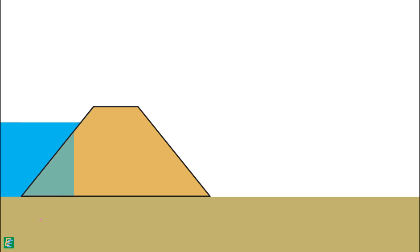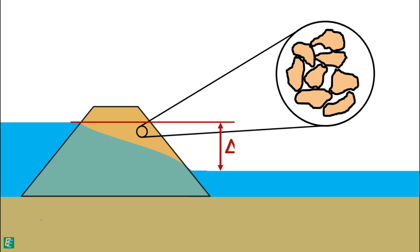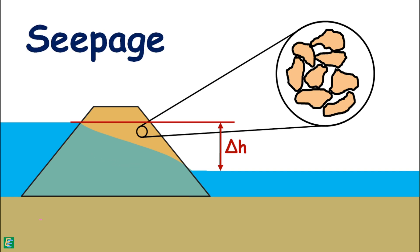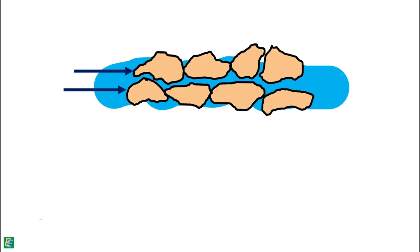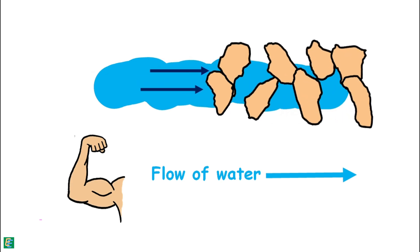The water that an earth dam holds on its upstream side flows through the voids present in the soil of the dam body to the downstream side, driven by hydraulic head difference. This phenomenon — the flow or movement of water through soil — is called seepage. As water flows through the soil, it exerts a drag on soil particles in the direction of its motion.